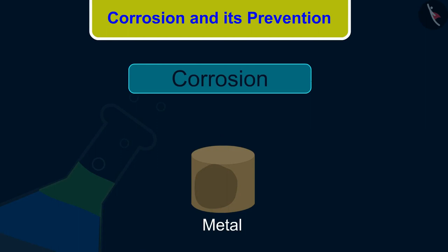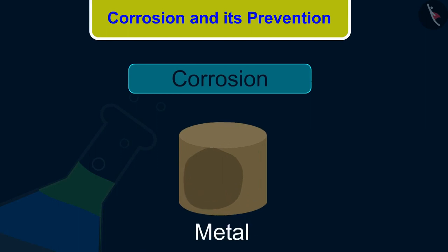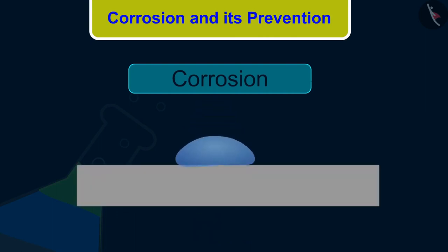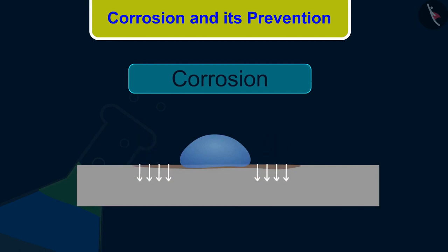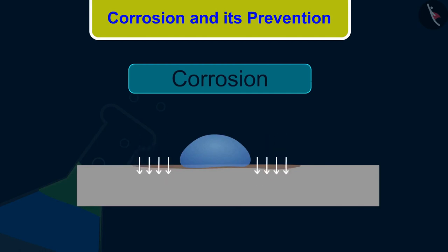The formation of such a substance tarnishes the metal — that is, it makes the surface of the metal appear dull. In some metals like iron, these compounds are porous and gradually fall off from the surface, and then the metal underneath is also attacked by these factors.